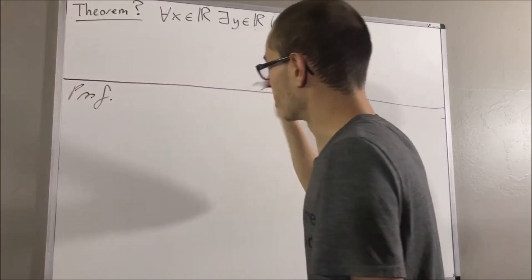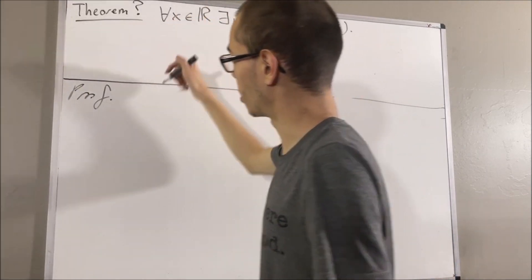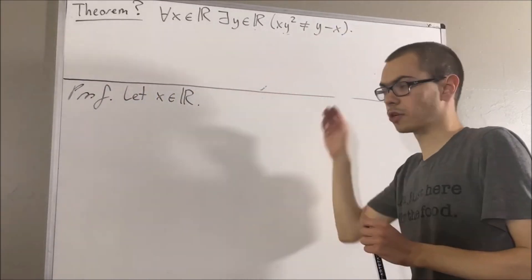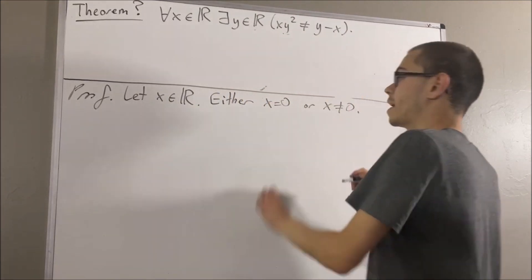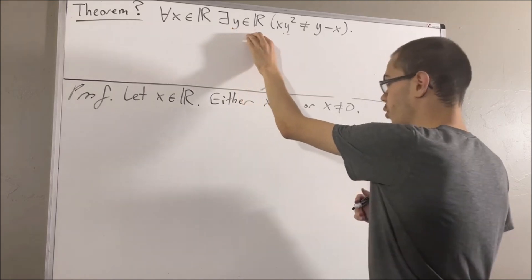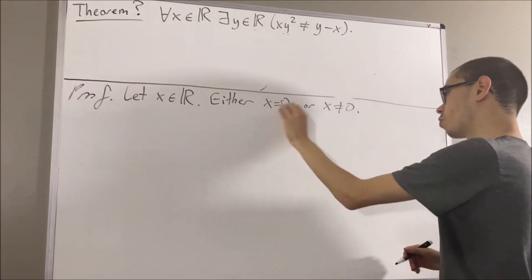Okay. Since we're trying to prove the statement about every real number, it could be an arbitrary real number. I'll call it x. And from here we divided it up into two cases: either x equals zero or x is not equal to zero. And in either case, we're going to show that there exists a real number y such that this is true. So let's start with case one, where x is equal to zero.